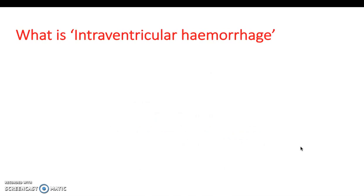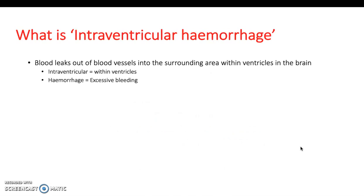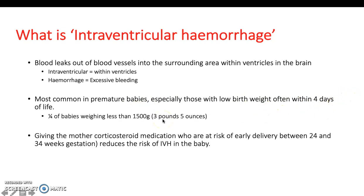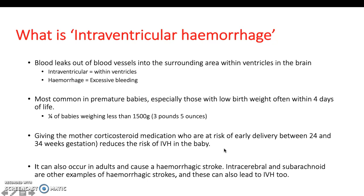An intraventricular haemorrhage is when blood leaks out of blood vessels into the surrounding area within the ventricles. It is most common in premature babies, especially those with low birth weight, and typically presents acutely in the first four days after birth. Giving the mother corticosteroids if she is at risk of early delivery can reduce the risk. IVH can also occur in adults causing haemorrhagic stroke, and intracerebral and subarachnoid haemorrhagic strokes can lead to IVH as well.